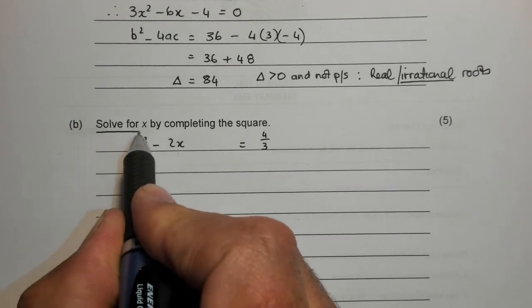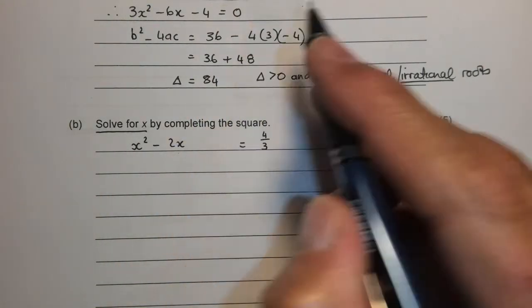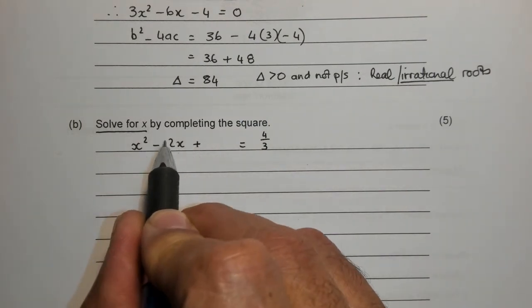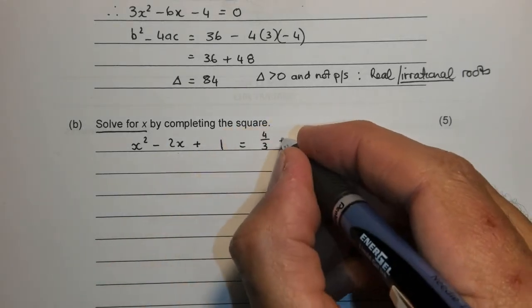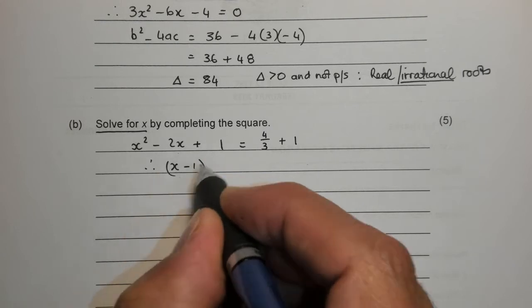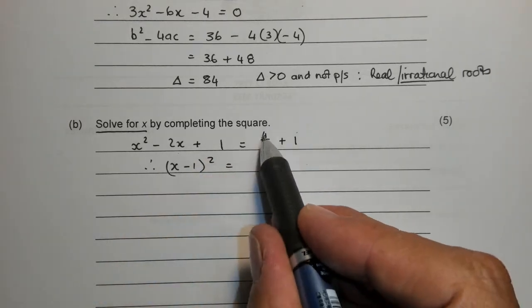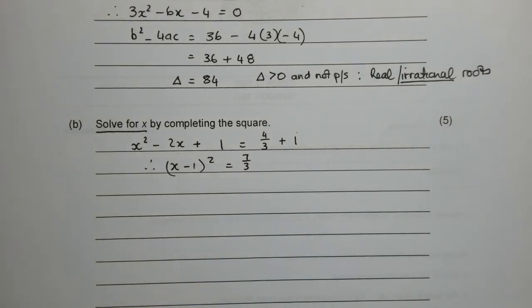Remember, we're solving the equation. So I can throw the 4 to the other side. Now the step where I complete the square, I half the middle term, which is 1 then, and I square it, and I add it to both sides. So on the left-hand side, I've got x minus 1, all squared is equal to 3 over 3, plus 4 over 3 is 7 over 3.